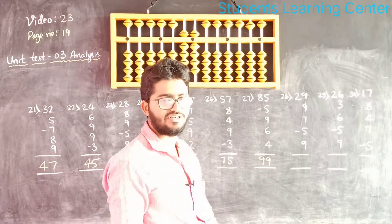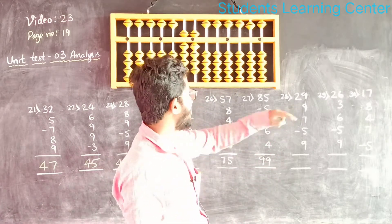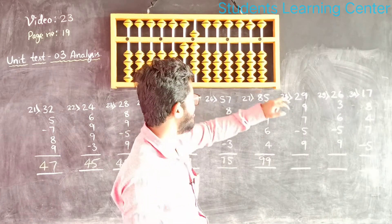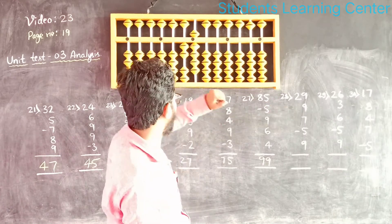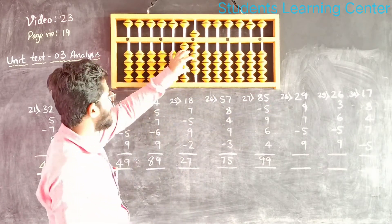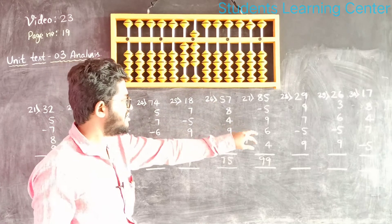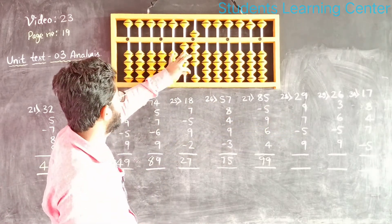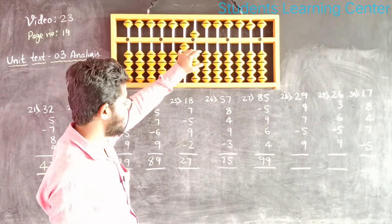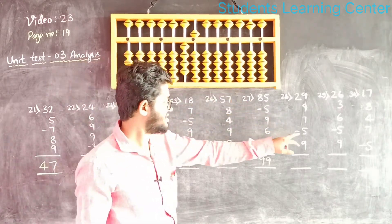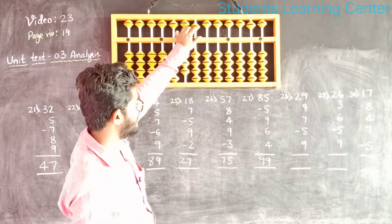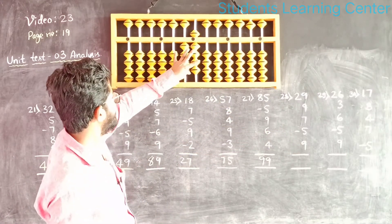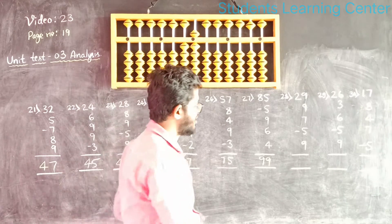Next question. Add 29, add 9 — add 9 means add 10 less 1. Add 7 — add 10 less 3, less 5. Then add 9. Answer is 49.